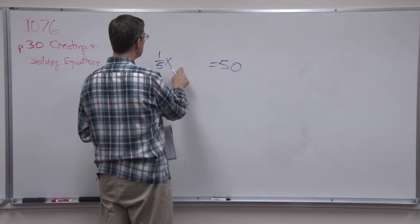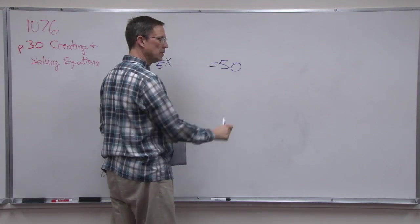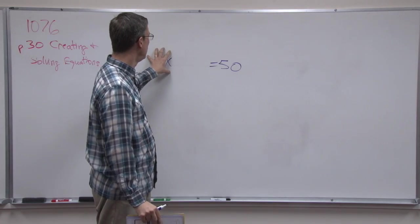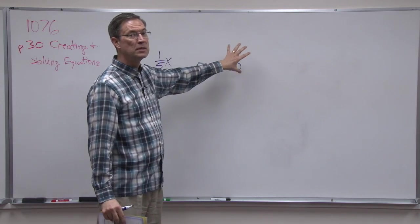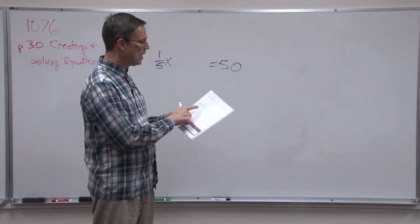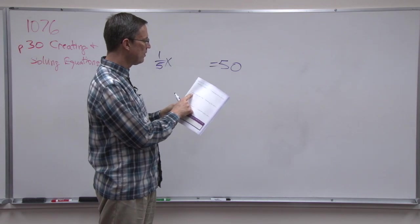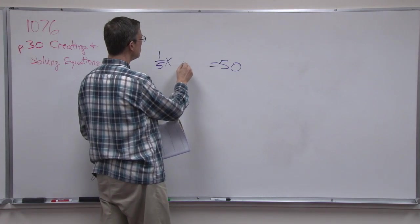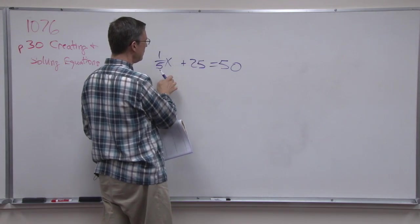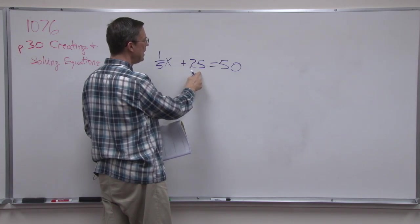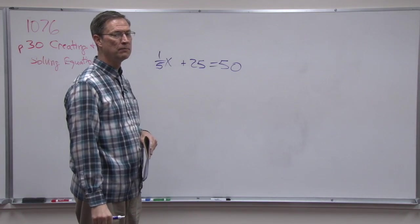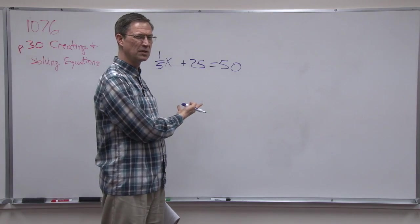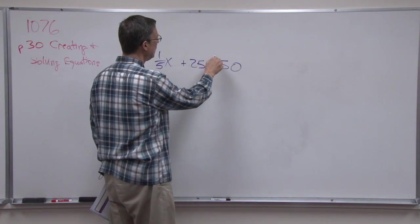So this does not equal this. Now, I have it written that they're equal. But when I read the problem, I realize one-fifth of this number does not equal 50. It's 25 more than one-fifth times a number. So that means I have to add 25 to one-fifth times a number, and then that will equal 50. So now that I have the equation set up, and we did this in an earlier lesson, just getting this far, setting it up.